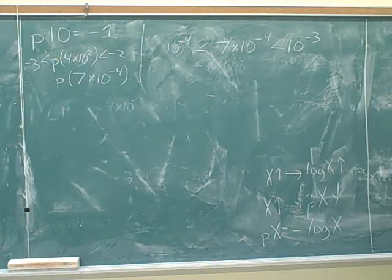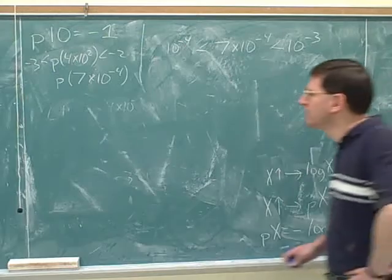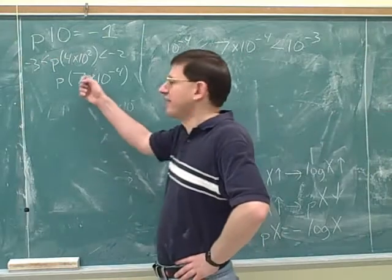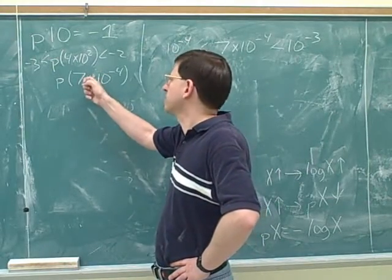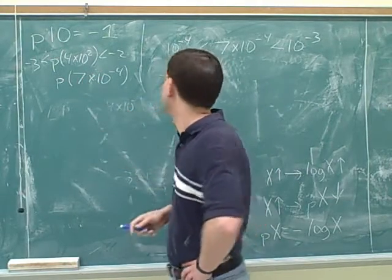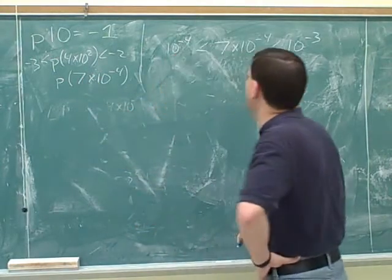It's between 3 and 4. The problem was to figure out the p of this number, and the p of this number is between 3 and 4. Good.